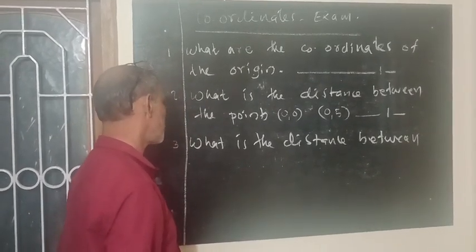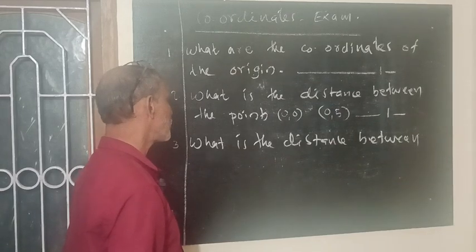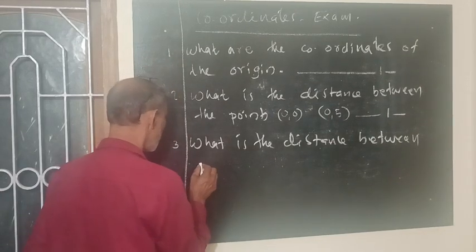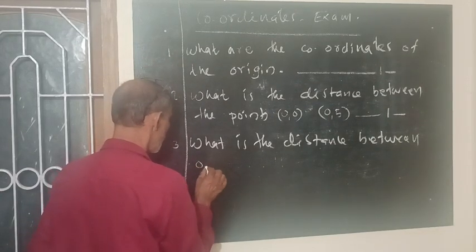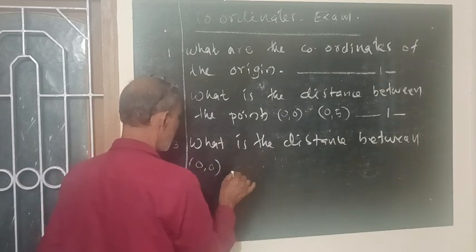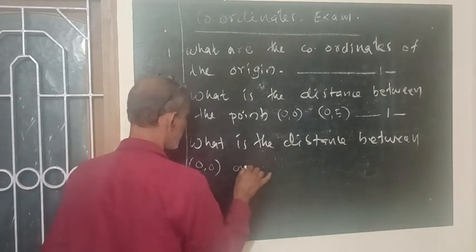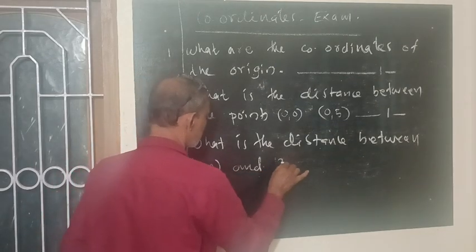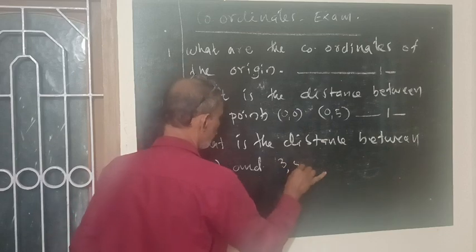Question number 3. What is the distance between (0, 0) — that means the origin — and (3, 5)?